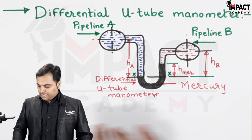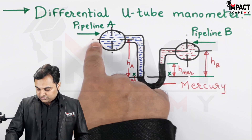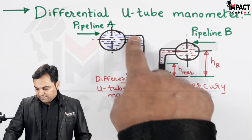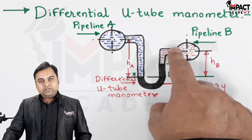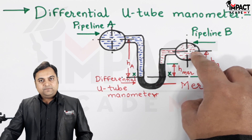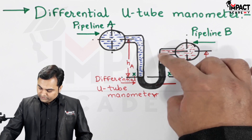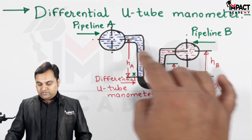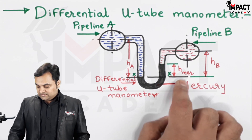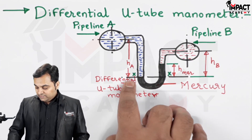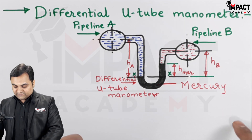It is not compulsory that the mercury height will always be in the right limb — it can be in the left limb as well. Mercury has shifted to the right limb because the pressure inside pipeline A is greater. If the pressure in pipeline B were greater than A, mercury would shift to the left limb. HM (suffix mercury) is the height of mercury.